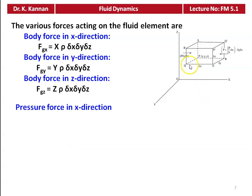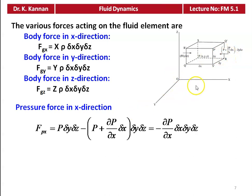For the pressure force in the x direction: the fluid enters with pressure P acting on area δy·δz, giving a force P·δy·δz. On the opposite face, the force is (P + ∂P/∂x · δx) · δy · δz. So Fpx = P·δy·δz − (P + ∂P/∂x · δx)·δy·δz, which simplifies to −∂P/∂x · δx · δy · δz.